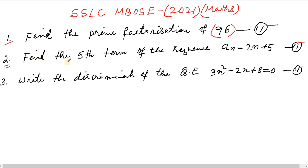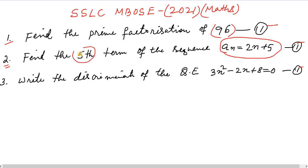Question number 2: Find the fifth term of the sequence where a_n equals twice n plus 5. This is the second term and this is the fifth term.